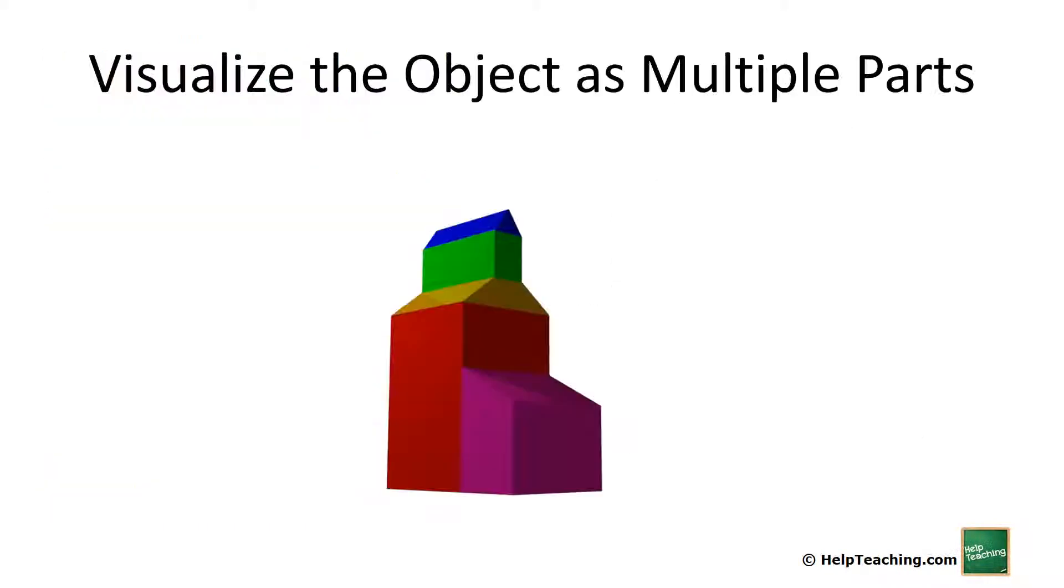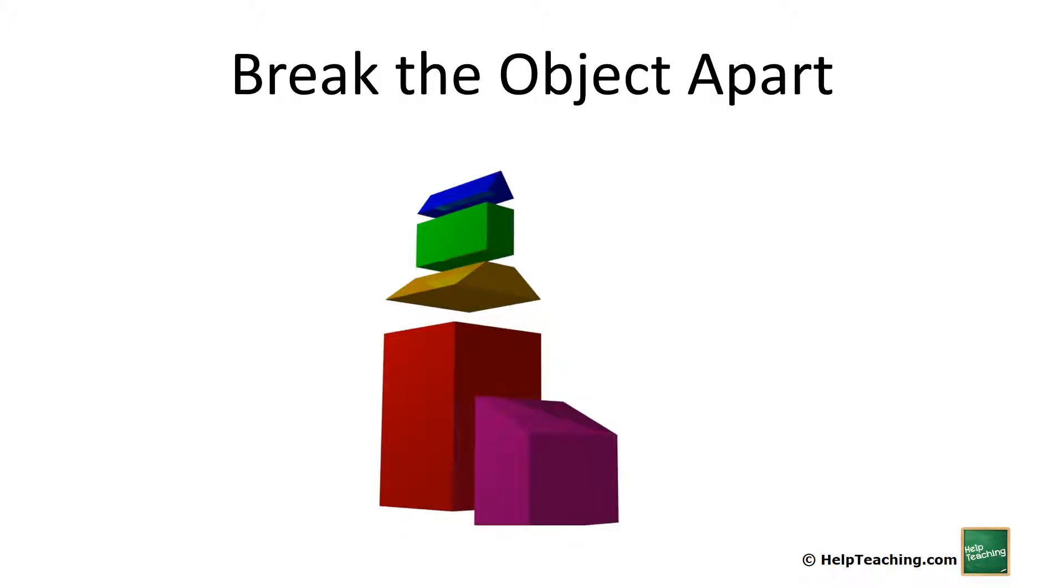Begin by visualizing the object as multiple parts. Here you can see I've color coded the different shapes. Then we break the object apart, think of it as totally separate objects, and calculate each piece separately.